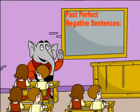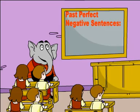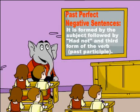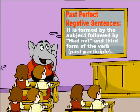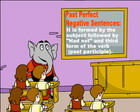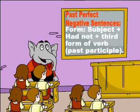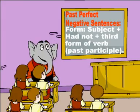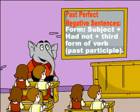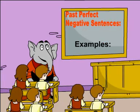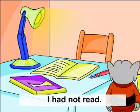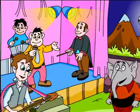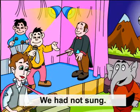3. Past perfect negative sentences. They are formed using 'had not' followed by the subject and the third form of the verb. Example: Had we sung.